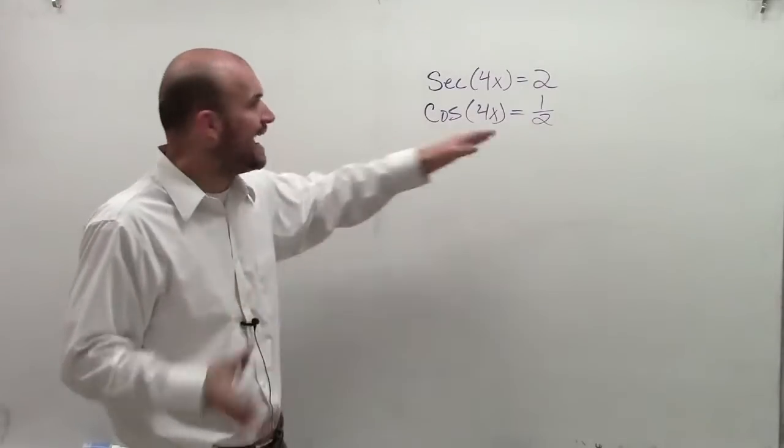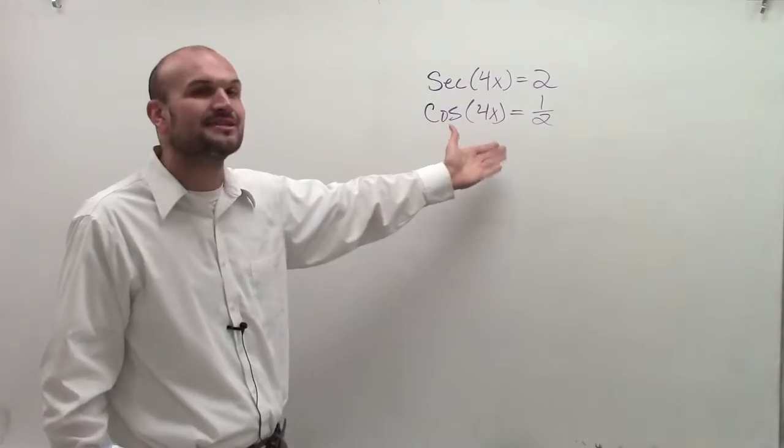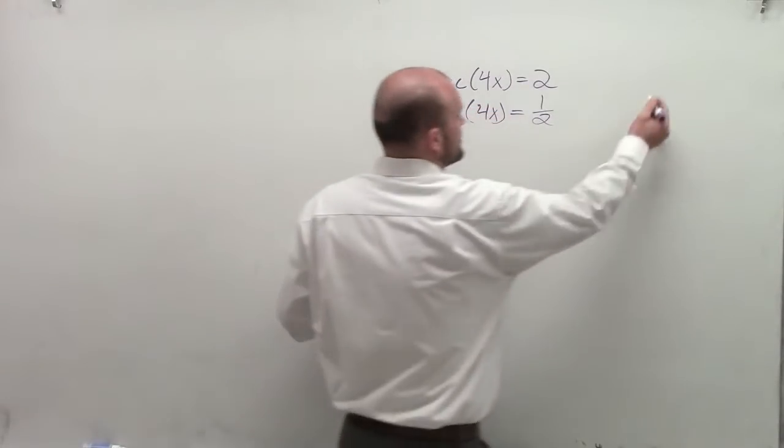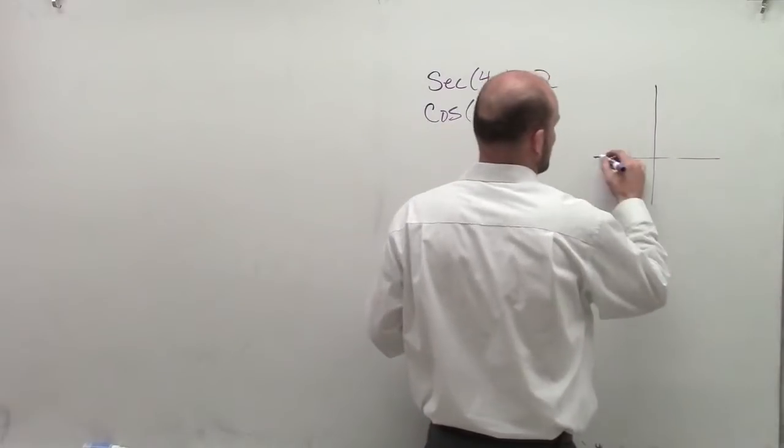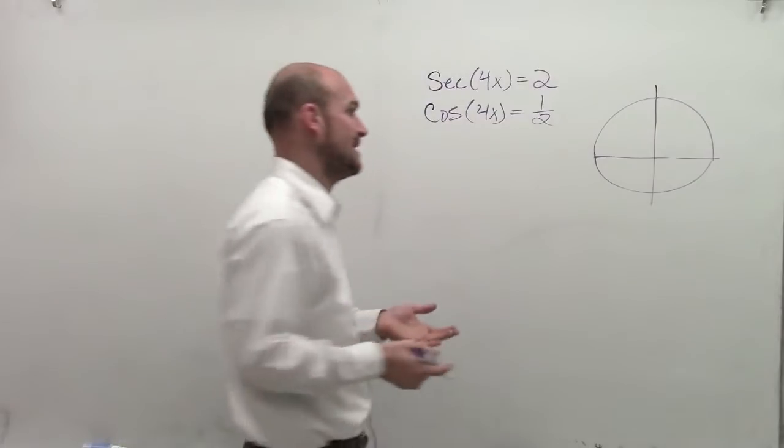And that's going to help me out because by knowing the unit circle, I can find when cosine is equal to 1 half a lot easier than it is for me to see when secant is equal to 2. So by creating the unit circle over here, I look at what are the values when cosine equals a positive 1 half.